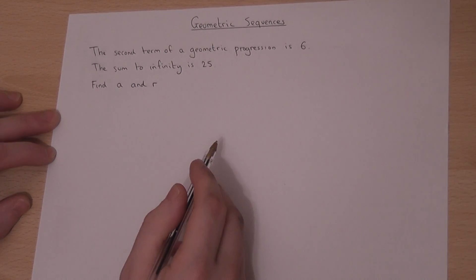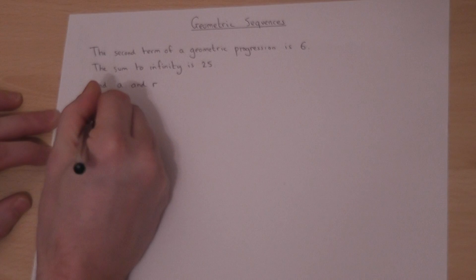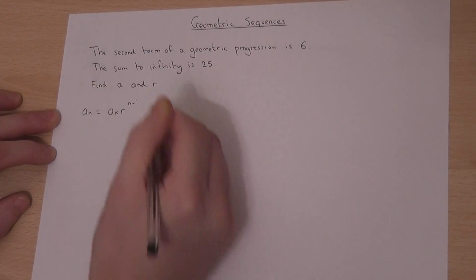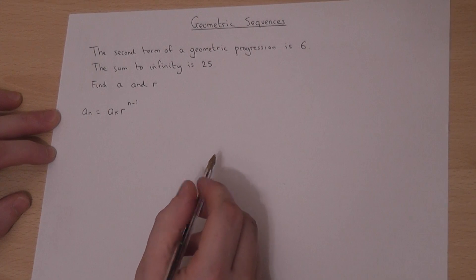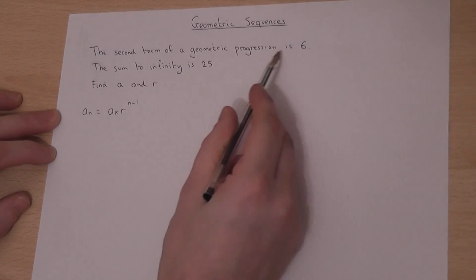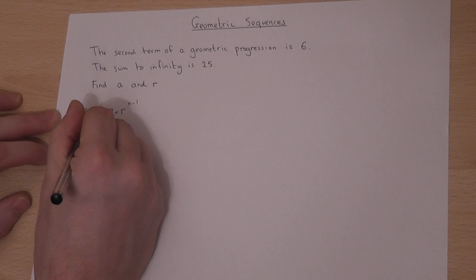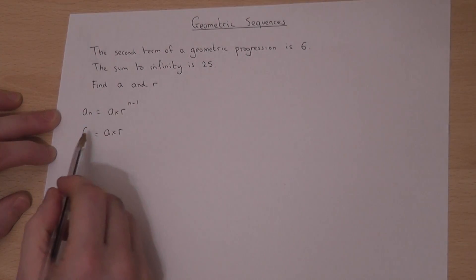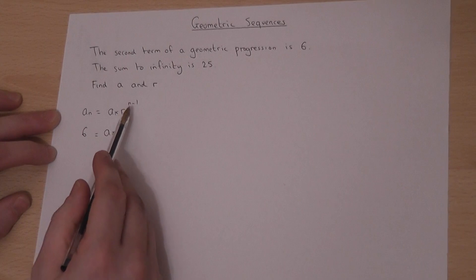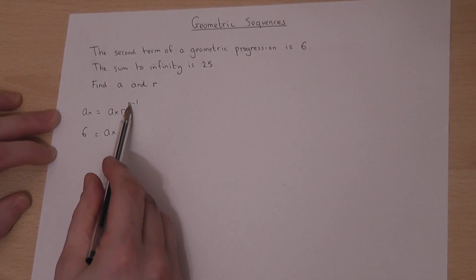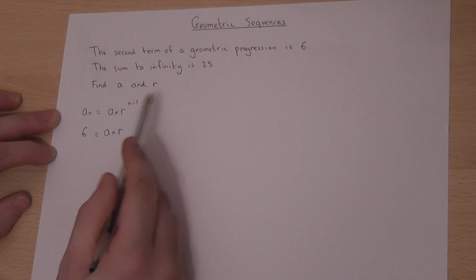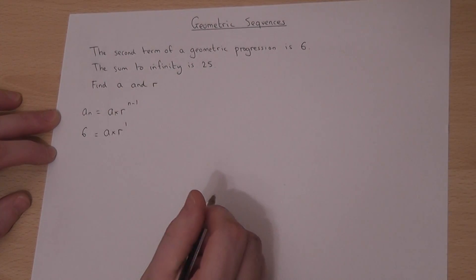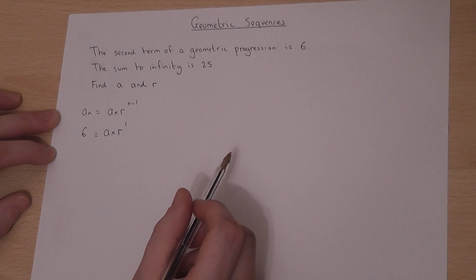For the second term, we know generally that a_n equals a times r to the n minus 1. So if we know the second term is 6, then 6 must equal a times r — since when n equals 2, the exponent is 1. So 6 equals a times r. That's equation 1.